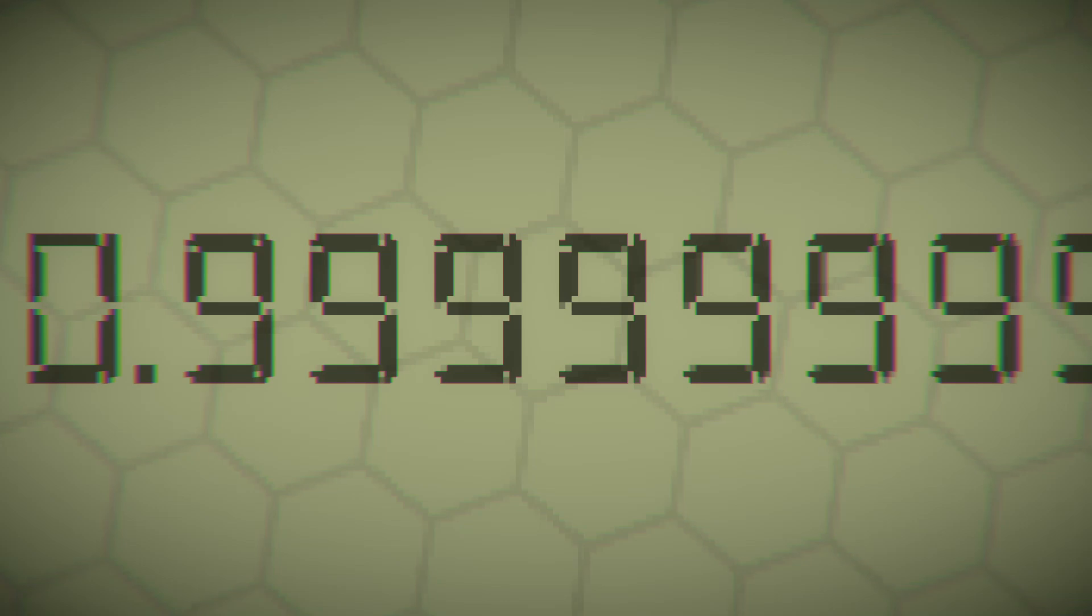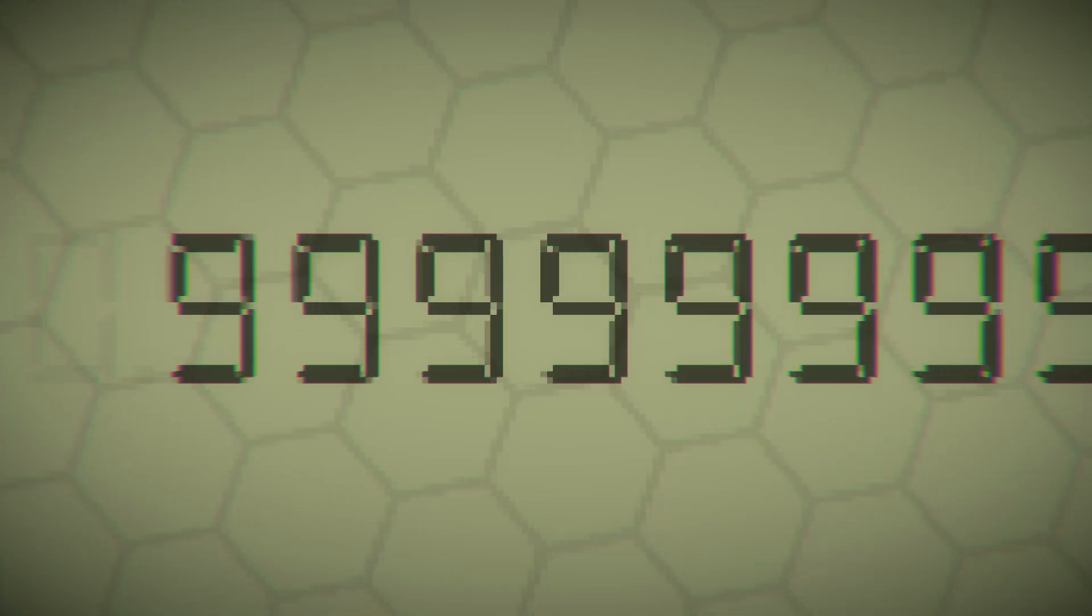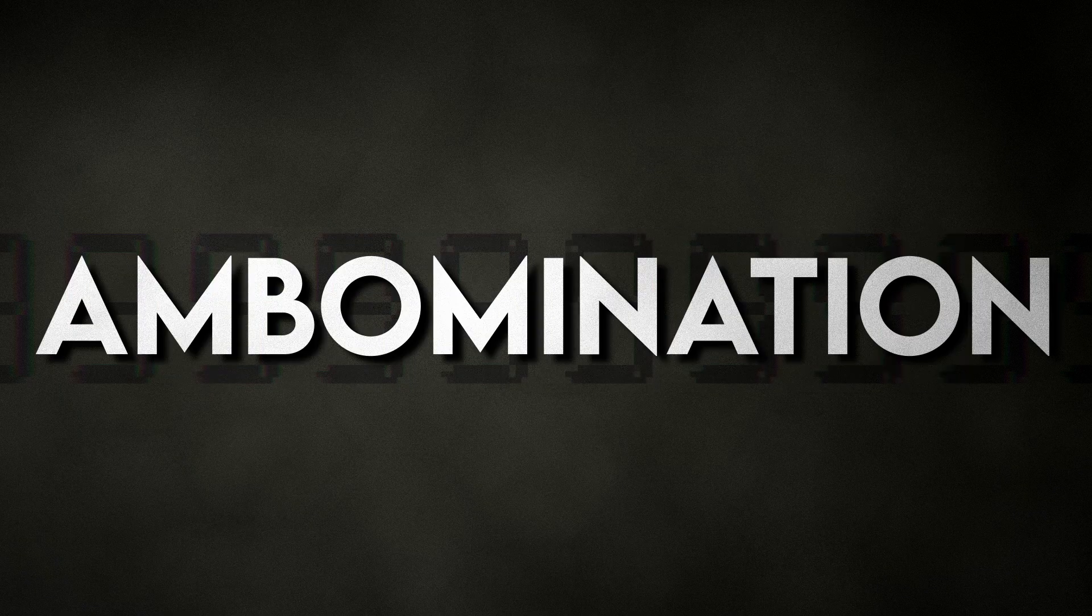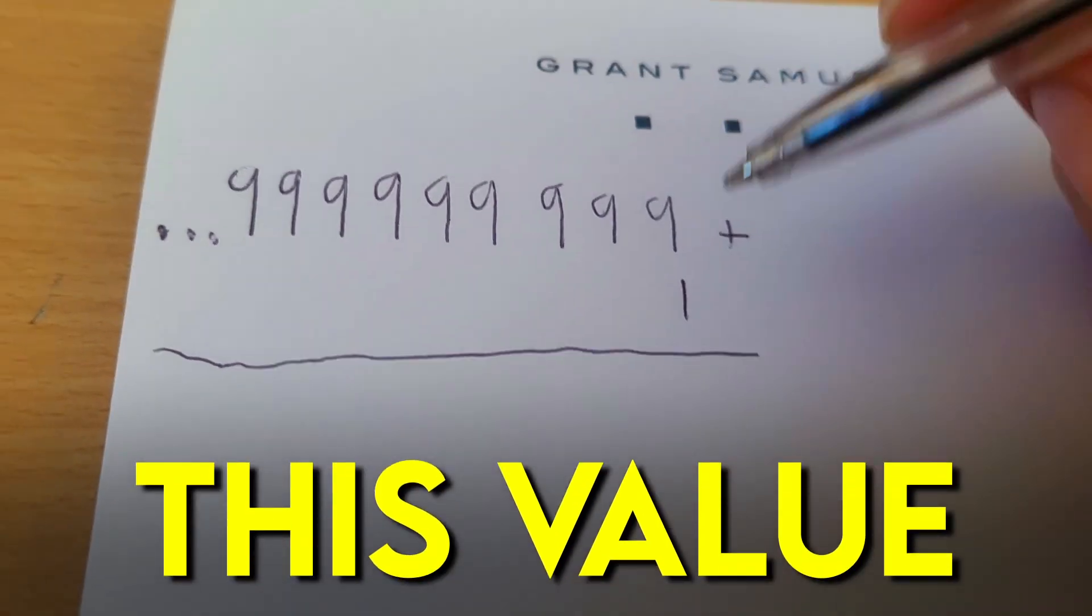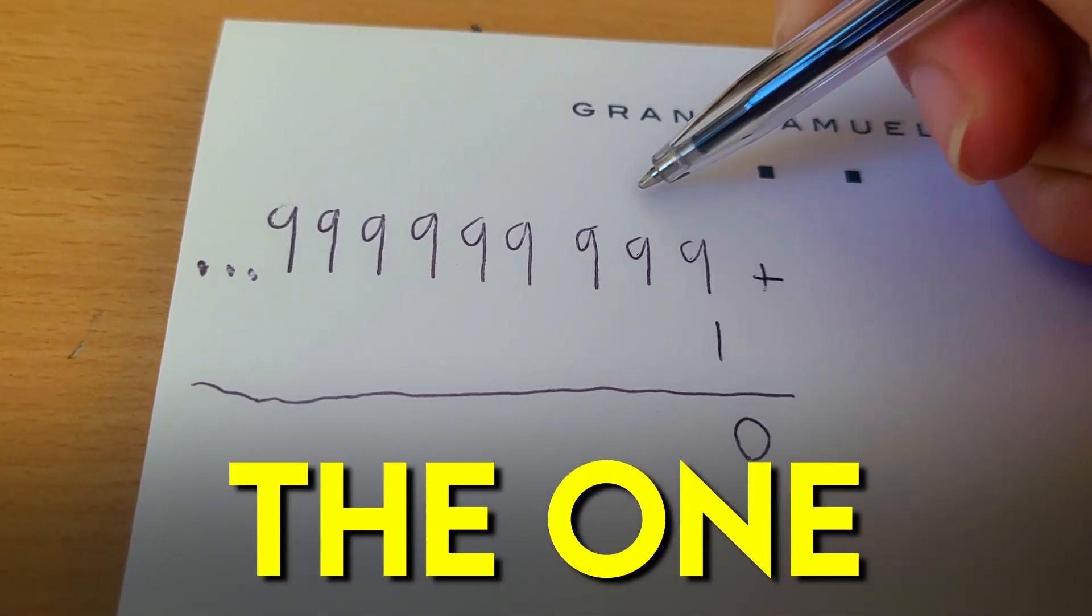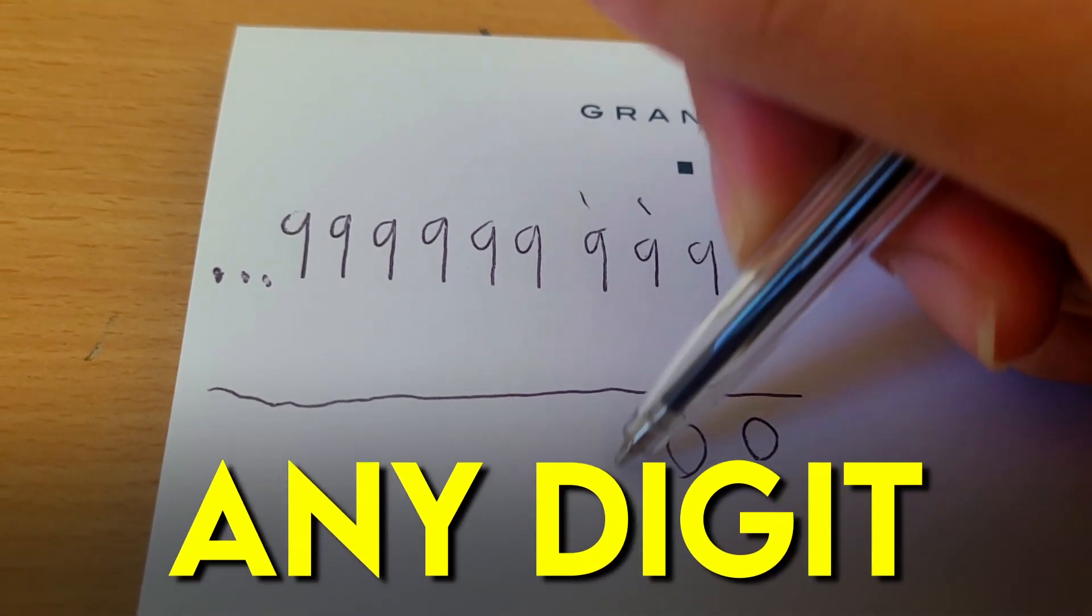We could take something like 0.9 repeating and move every 9 to the left, which creates this abomination. If we add 1 to this value, then it keeps on carrying the 1 without ever actually getting any digit other than 0.